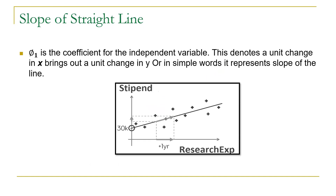Phi 1 indicates the slope of the line. This is also known as the coefficient of the independent variable, and it denotes a unit change in x brings about a unit change in y. It represents how much change in stipend is caused by a unit change in research experience. If we increase research experience by 1 year, what will be the corresponding change in the stipend? If the slope of the line is high, then by adding 1 year of experience there will be a huge increase in the stipend. But if the slope is low, then by adding 1 year of experience there will be not much change in the stipend.